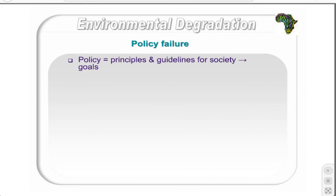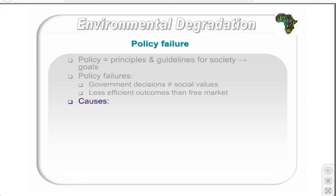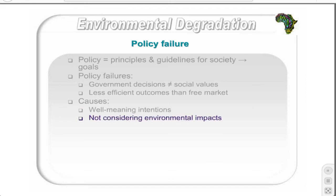Policy provides principles and guidelines for societies to behave in a certain direction for the achievement of specific goals. Policy failures occur when governments make decisions that do not reflect true social values or produce less efficient outcomes than a free market would, often due to well-meaning intentions that do not consider environmental impacts. For instance, government may want to help the agricultural sector but do so by reducing the cost of environmentally harmful inputs, causing farmers to use more of these and have a greater impact on the environment.